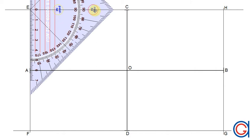The next step is to divide the line segment EA into as many equal parts as we like using Thales' theorem. The more divisions, the more accurate the ellipse will be. So let's divide the line segment EA into five equal parts.